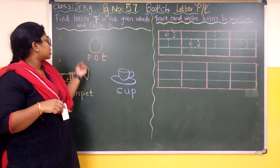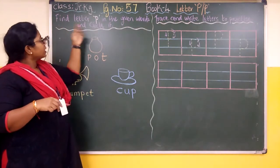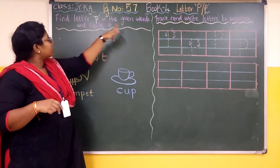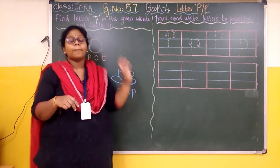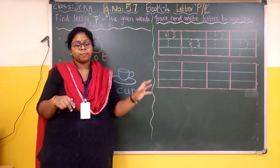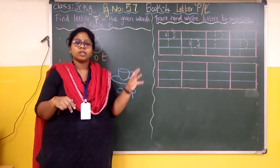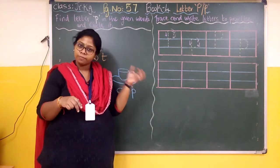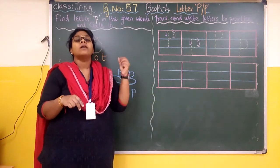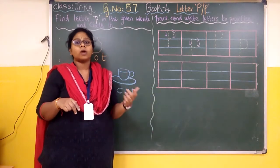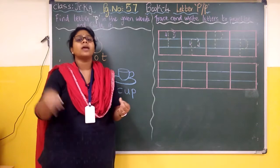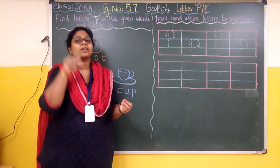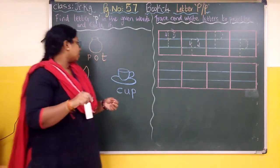So we will look into our first activity: find letter P in the given words and circle it. You have to find out where the letter P is coming and make a circle around it.